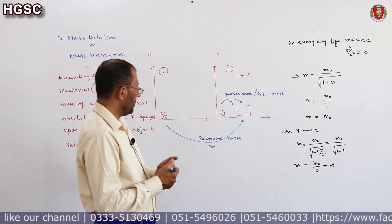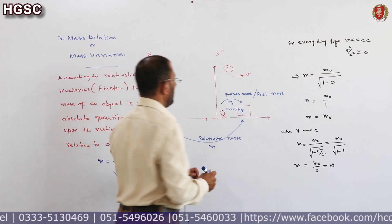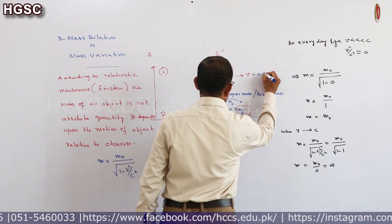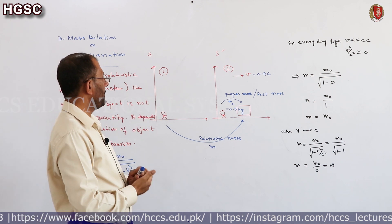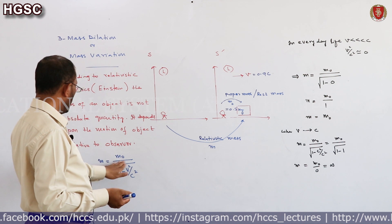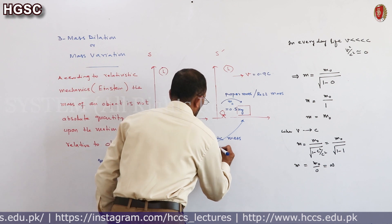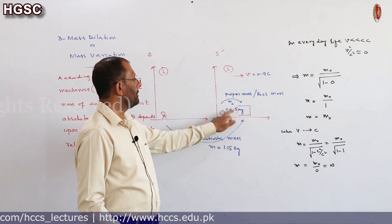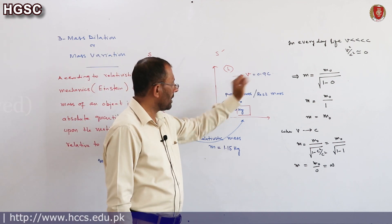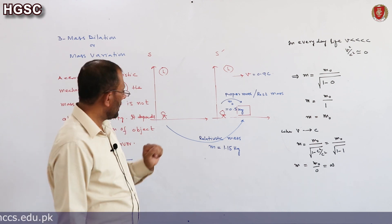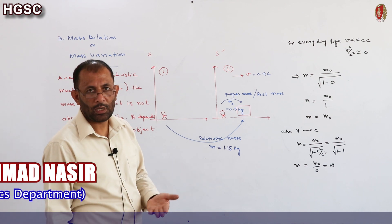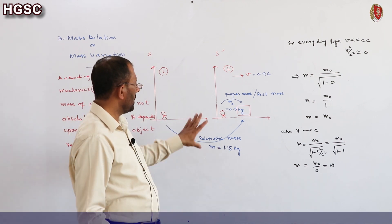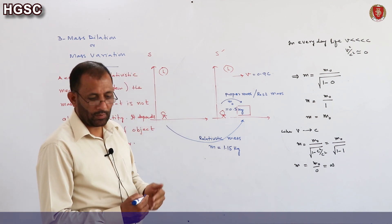ایک example: suppose کریں کہ اس object کی proper mass 0.5 kg ہے اور یہ frame of reference move کر رہی ہے with very high velocity — about 90% of the velocity of light. اب اس expression m = m₀ / √(1 − v²/c²) سے m کی value calculate کریں تو you get the result 1.15 kg. اس کا مطلب ہے کہ ایک object جس کی mass 0.5 kg (آدھا کلو گرام) ہے، اگر وہ 90% of the velocity of light کے ساتھ observer کے relative move کرے تو اس کی mass double سے بھی زیادہ — 1.15 kg ہو جائے گی۔ یہ result اس وقت hold کرتا ہے جب velocity comparable to the velocity of light ہو۔